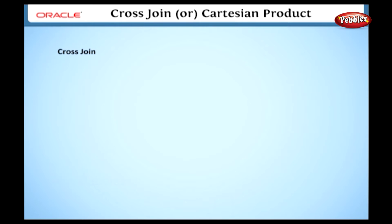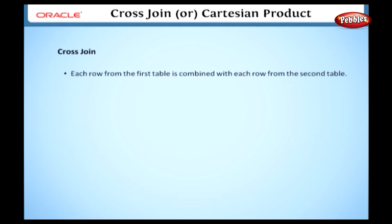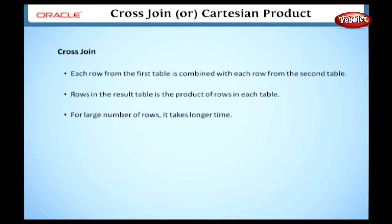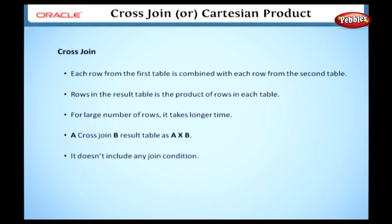First, we will see the cross join or Cartesian product. A cross join will return a result where each row from the first table is combined with each row from the second table. The number of rows in the result table is the product of the number of rows in each table. If the table contains large numbers of rows, this join can take a very long time. If A and B are two tables, the cross join produces the result table named A cross B. It does not include any joining conditions.